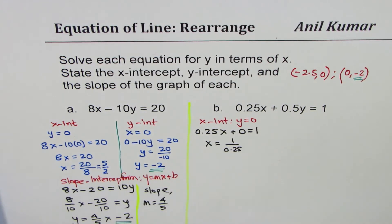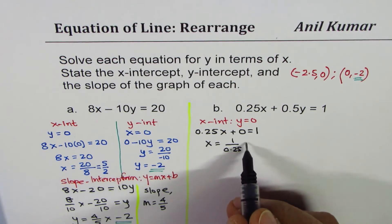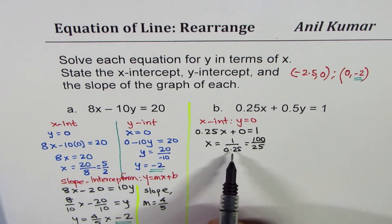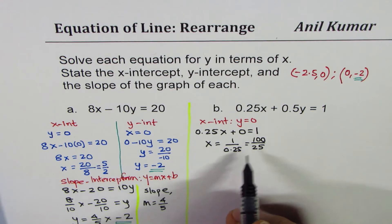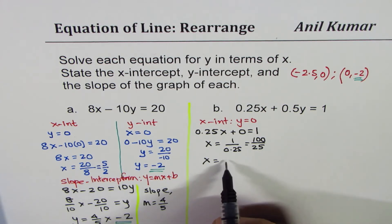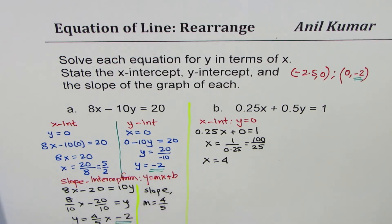Or we can say x equals 1 divided by 0.25. Now how much is that? If the calculator is not allowed, we can actually write this as 100 over 25. Writing decimals, multiply both by 100, so get rid of decimals. And you know what this is. 100 divided by 25 is 4 quarters, so we get 4 as the value of x. Use calculator, then also you'll get the same answer.